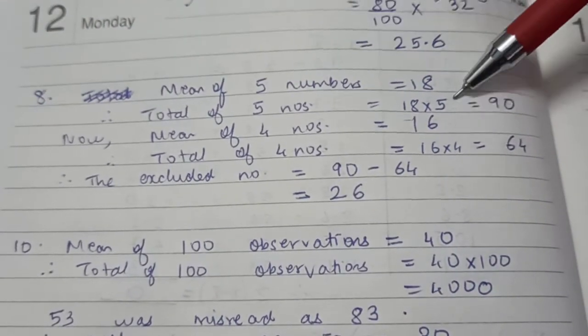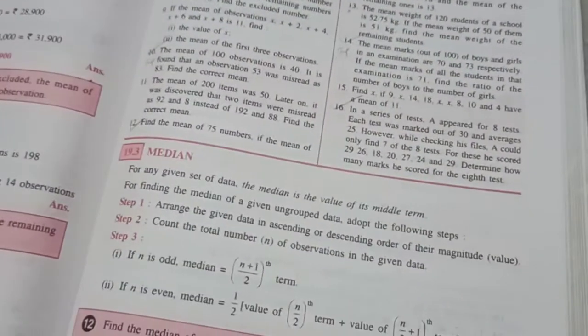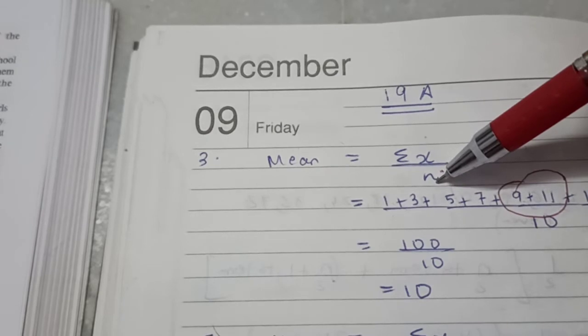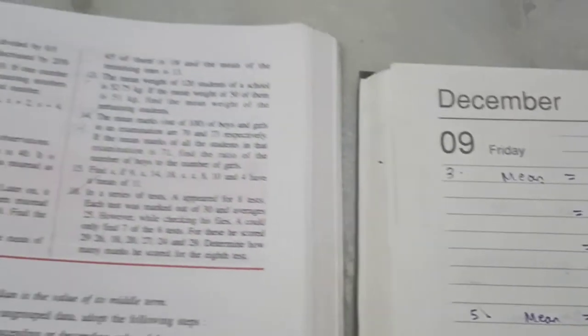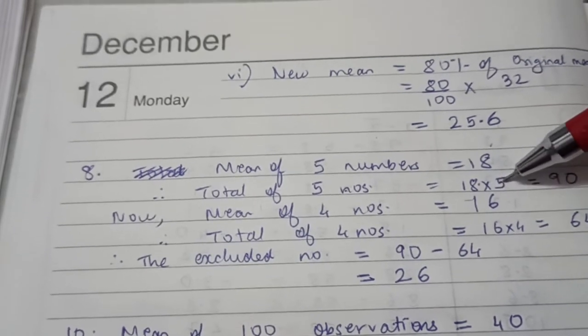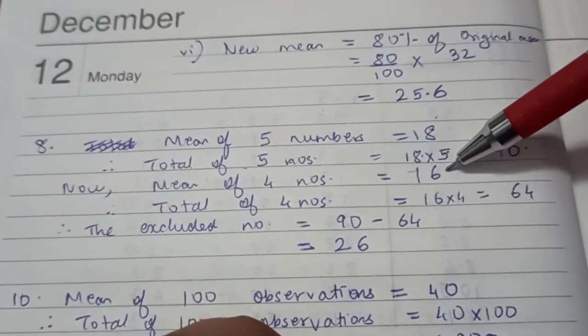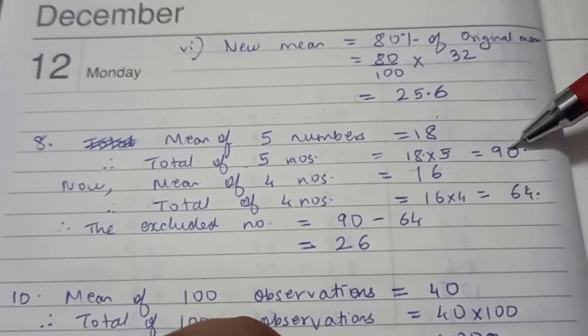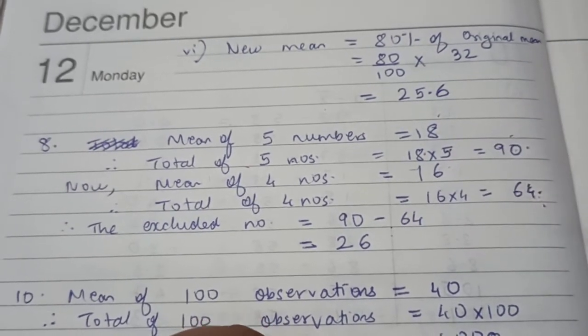So first, we have the mean of 5 numbers 18. So the total of 5 numbers will be 18 into 5. You see, this is derived from the mean formula. If mean is the total upon the number of observations, then if you cross multiply, if n goes up, I can say the total is equal to mean into number of observations. So that's what I have done here. We've got mean given, so the total is equal to the mean into the number of observations, which comes out to be 90. But if you exclude one number and the mean of the remaining 4 numbers is 16, so the total of the remaining 4 numbers is 64. Obviously the total of the remaining 4 numbers will be less than the total of the 5 numbers, and the difference between them is the excluded number.